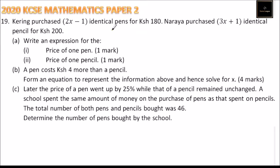Let's start with Part A. Since Kering used 180 to purchase the pens, the cost of one pen is 180 divided by the number of pens bought, which is 2x minus 1. For Part A(ii), Naraya used 200 to buy 3x plus 1 pencils, so we divide the amount by the number of items bought: 200 divided by 3x plus 1.